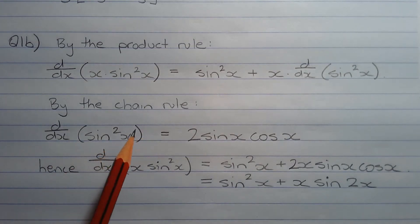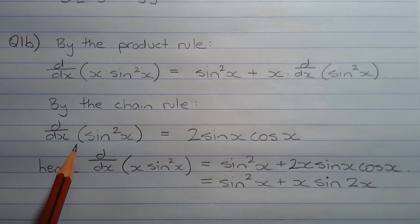By the chain rule, we have the derivative of the outer function multiplied by the derivative of the inner function. So the outer function involves a square and the inner function involves sine x.